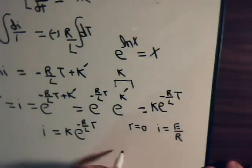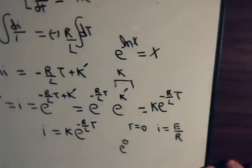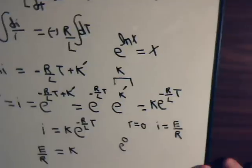When t equals zero, we have e to the zero. Of course, that's just one. So we have k times one, that's just k, equals I. And when t equals zero, I equals E over R. So we know what k is. k is just equal to E over R. So let's put that in.